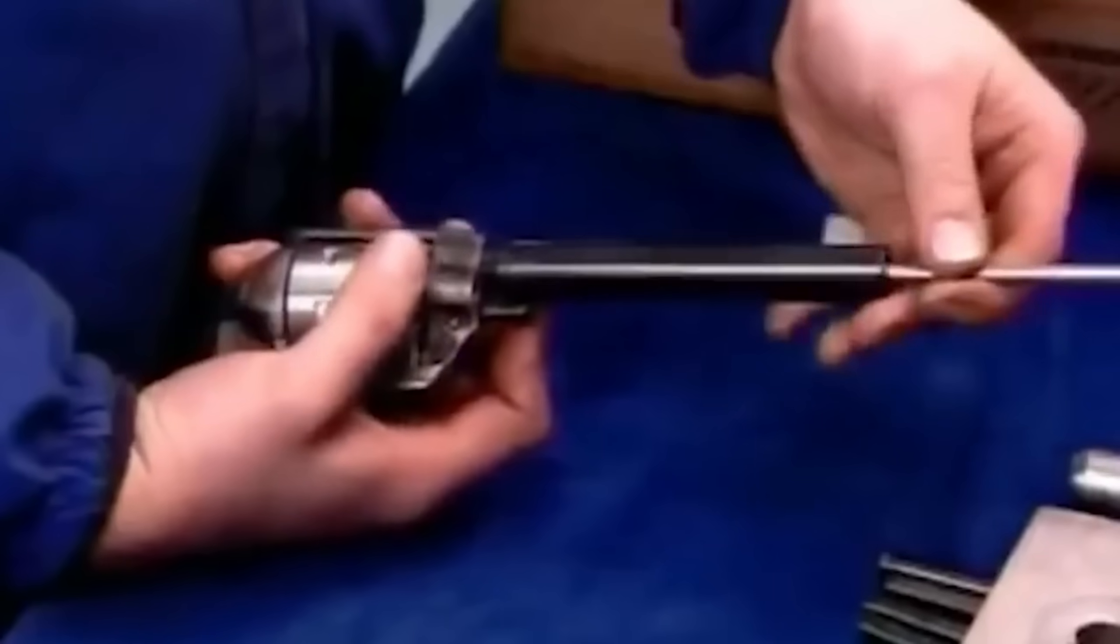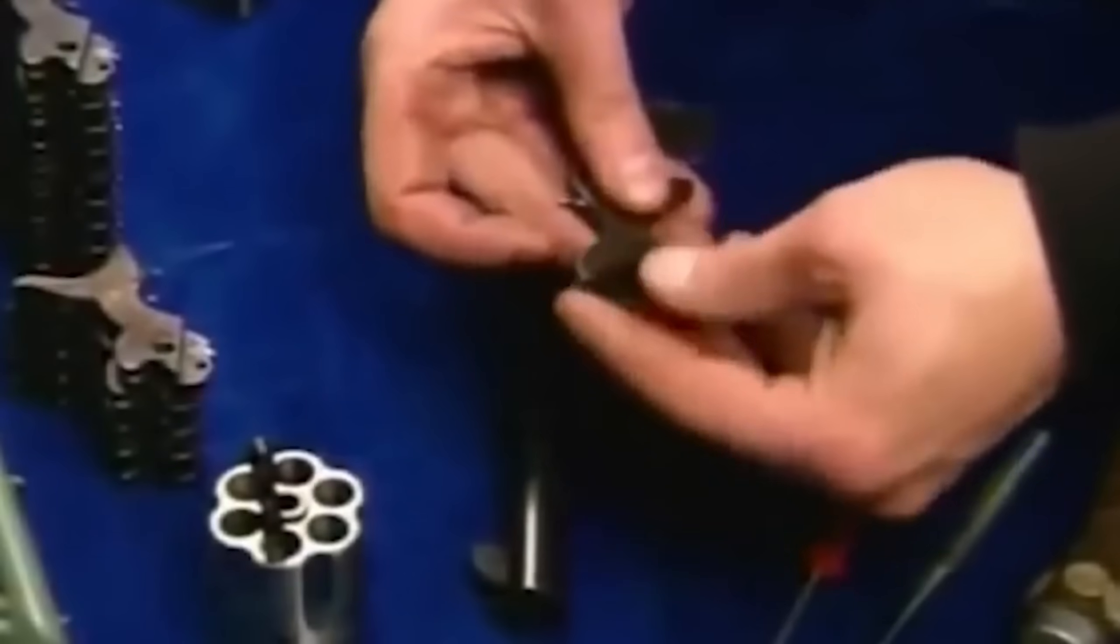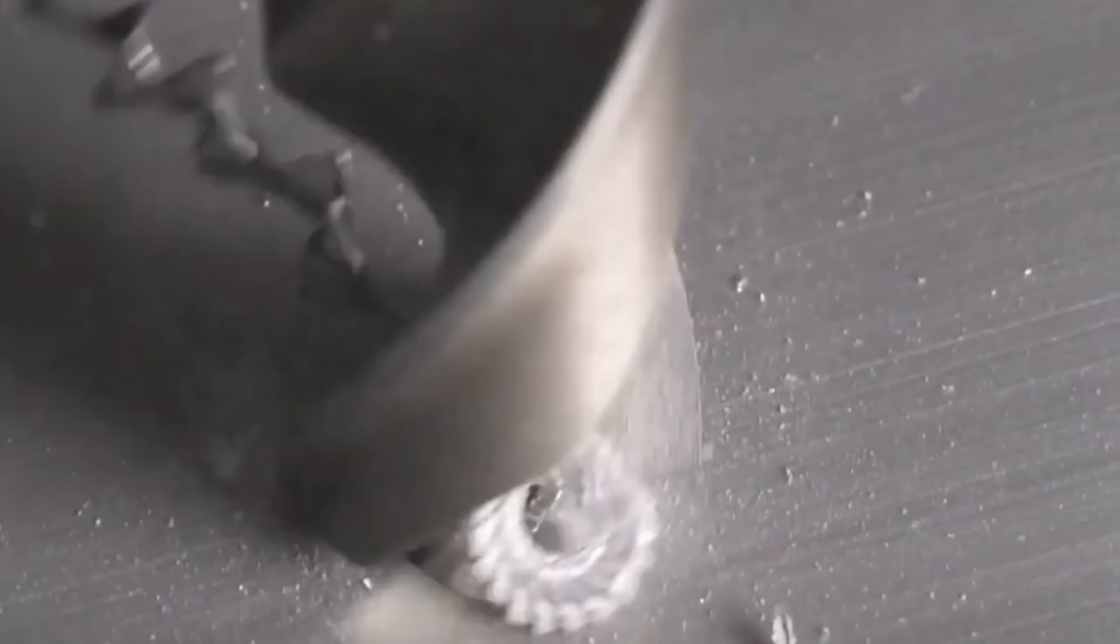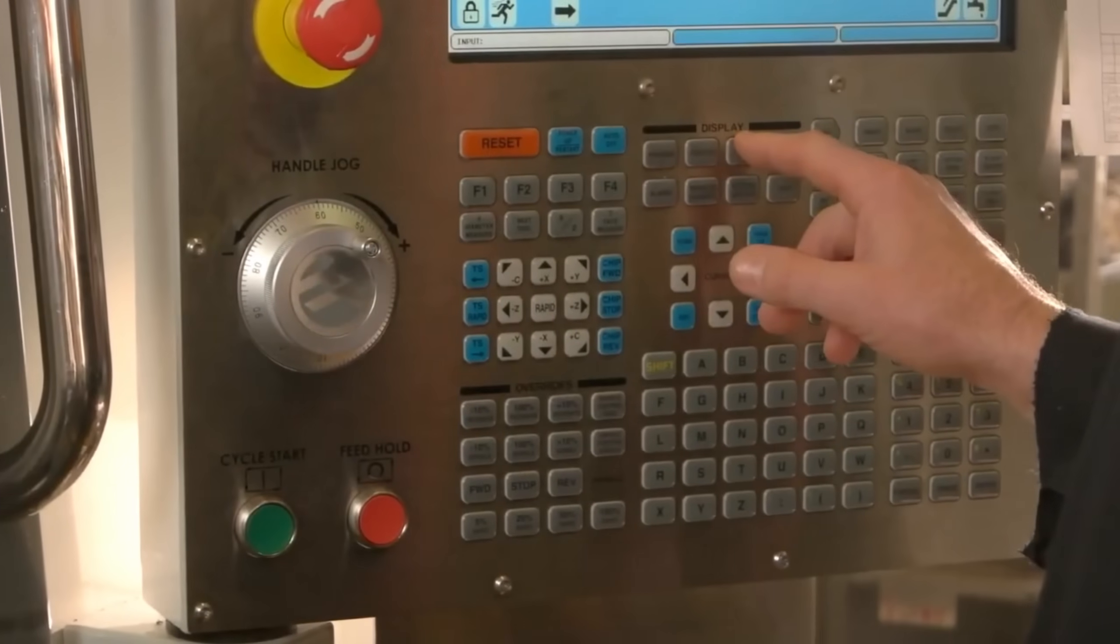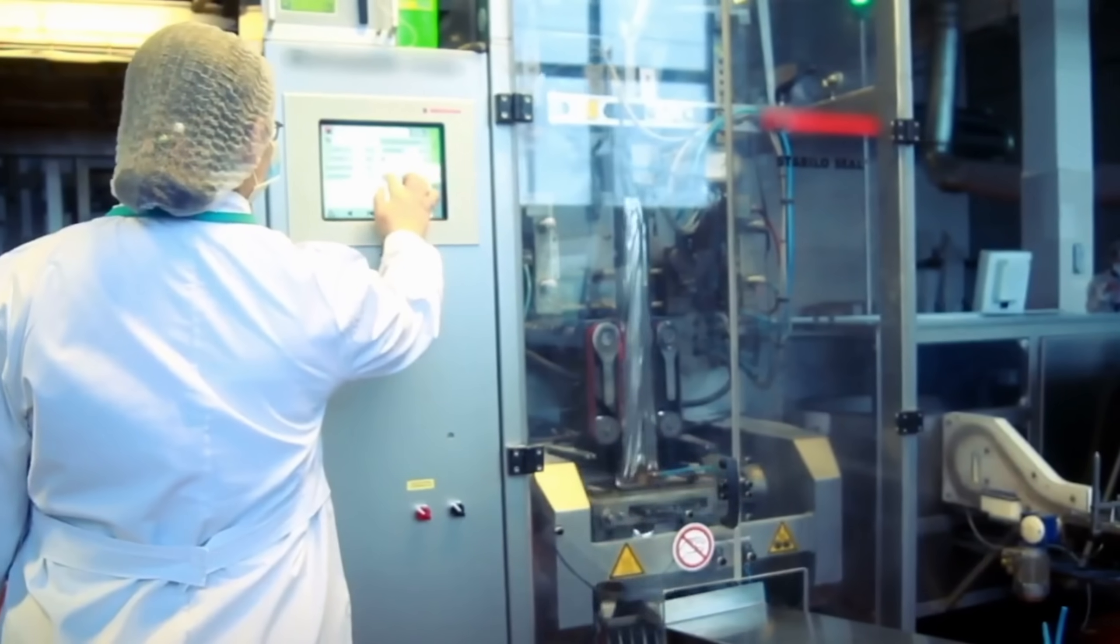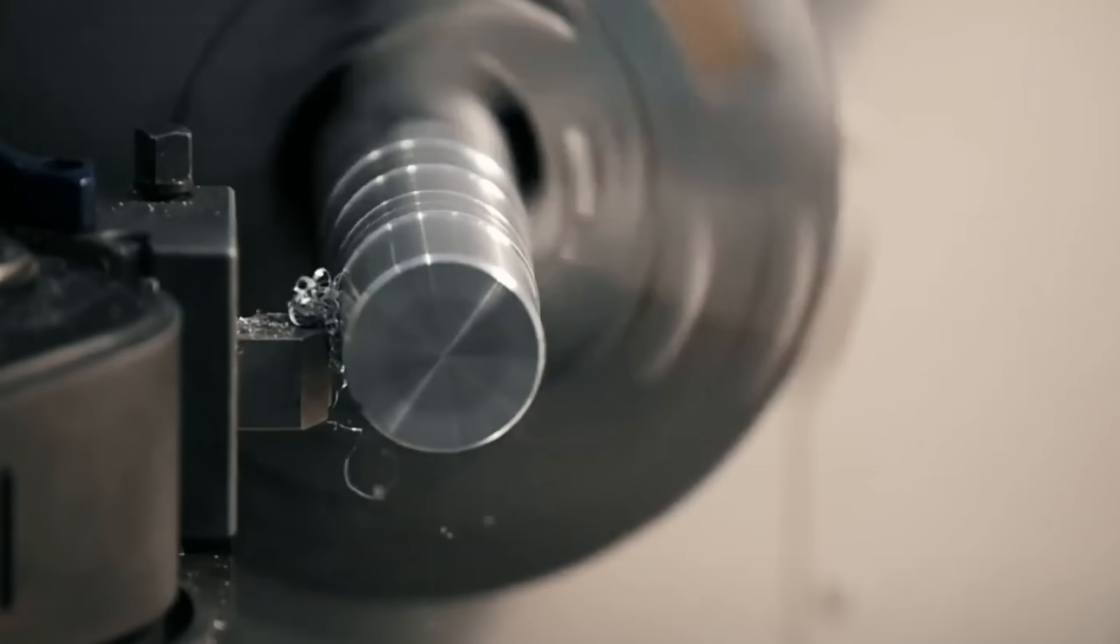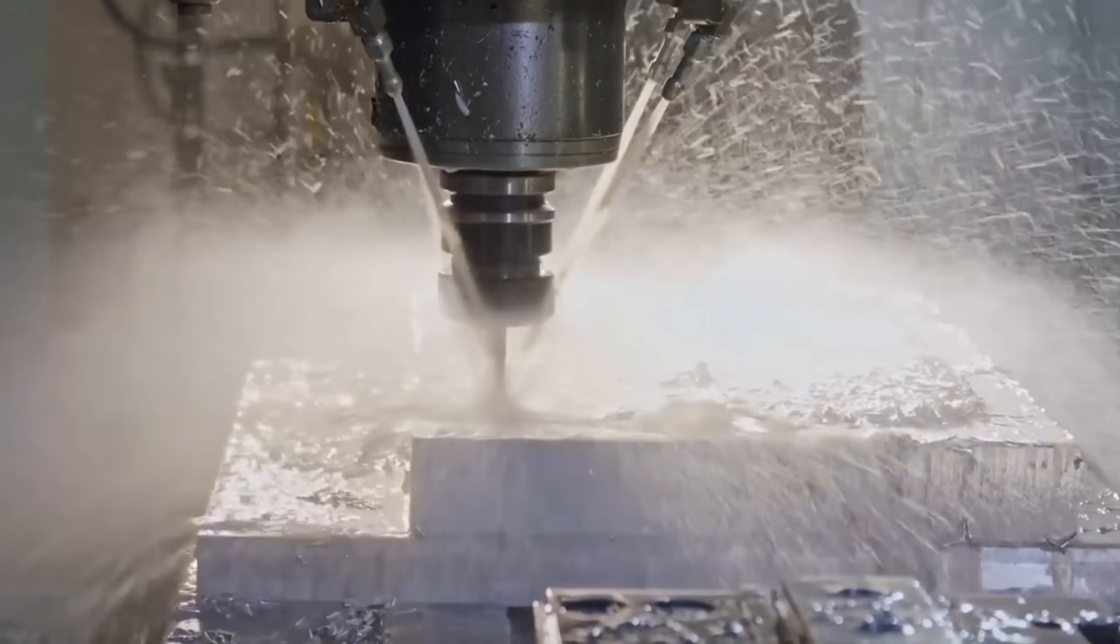Next, the blank is loaded into a multi-axis CNC machine. This computer-controlled setup carves the metal with exacting accuracy, shaping the outside of the cylinder and drilling the chambers. The machine drills each chamber to within a few microns of tolerance so that every round lines up perfectly with the barrel. This step is critical. Any misalignment could cause the revolver to malfunction or wear out prematurely.